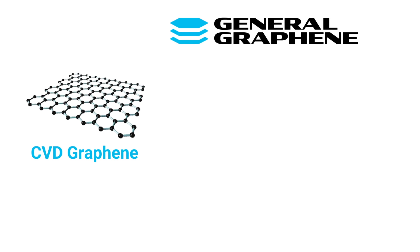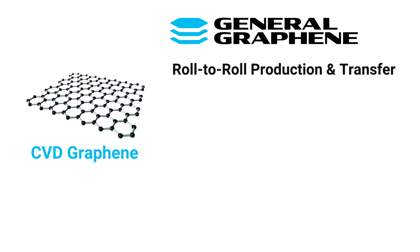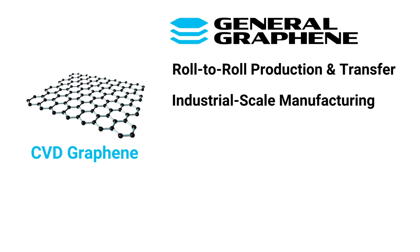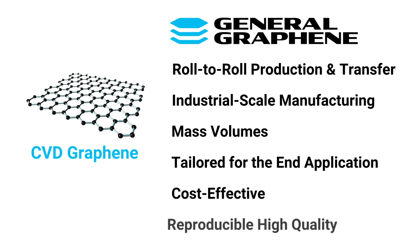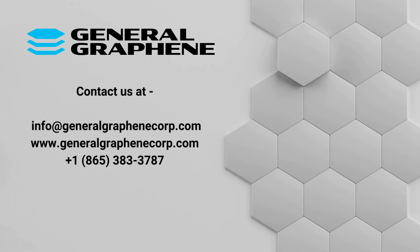At General Graphene we are shifting the needle on the commercialization of CVD graphene with our proprietary roll-to-roll production and transfer technologies, enabling true industrial scale manufacturing. We offer a range of CVD graphene materials in mass volumes, tailored for a wide range of customer applications, made cost-effectively at reproducible high qualities. If you're interested in learning more or working with our industrial scale CVD graphene, please visit our website or contact us by email or phone.